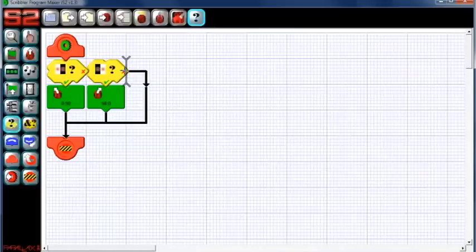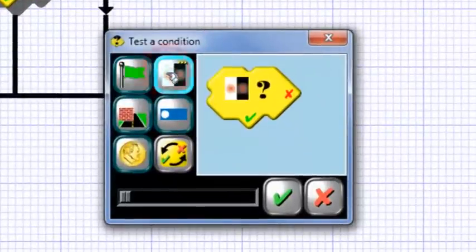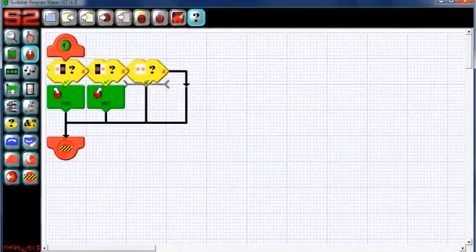Next, let's check if both sensors are over the white line. If this is true, the S2 should move forward.